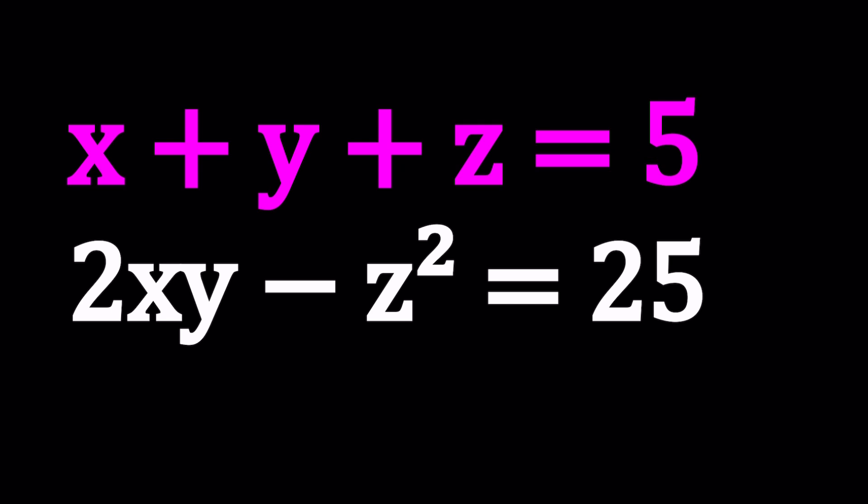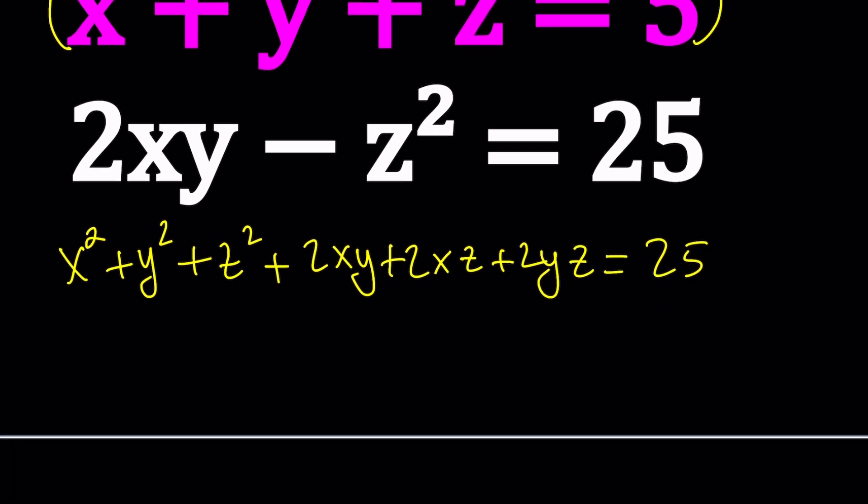So now let's go ahead and start by squaring both sides on the first equation. That's going to give us x squared plus y squared plus z squared. Remember the formula? Plus 2xy plus 2xz plus 2yz and that's equal to 25. So far so good?